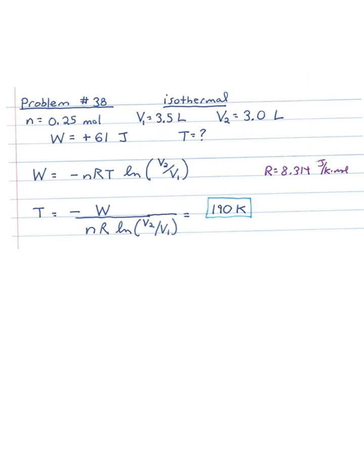Let's look at problem number 38 at the back of chapter 18. Given: N = 0.25 moles, V1 = 3.5 liters, V2 = 3 liters, W = +61 joules. The question asks for the temperature. We take our isothermal process equation — W = −nRT × ln(V2/V1) — and solve for T. R is the universal gas constant: 8.314 J/(K·mol). Solving: T = −W / [nR × ln(V2/V1)]. Plugging in those numbers, we get T = 190 Kelvin.